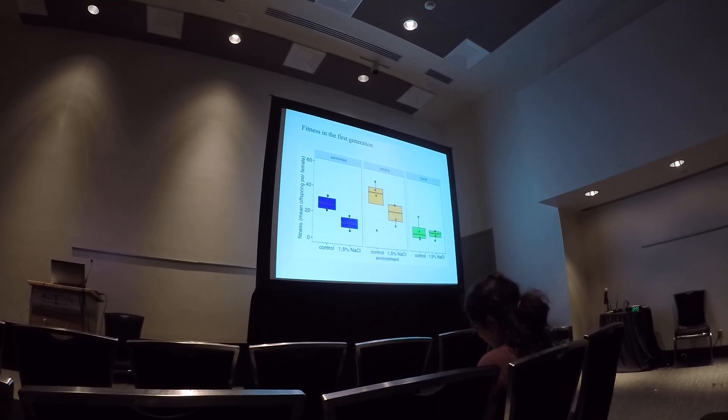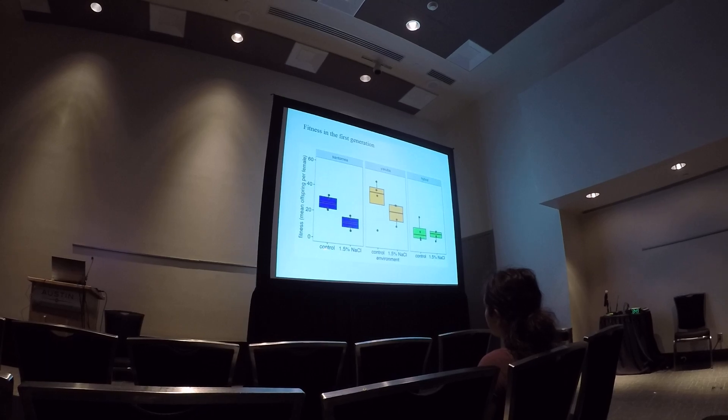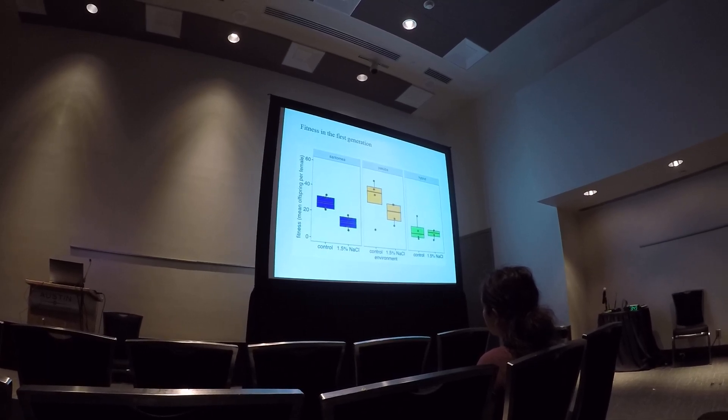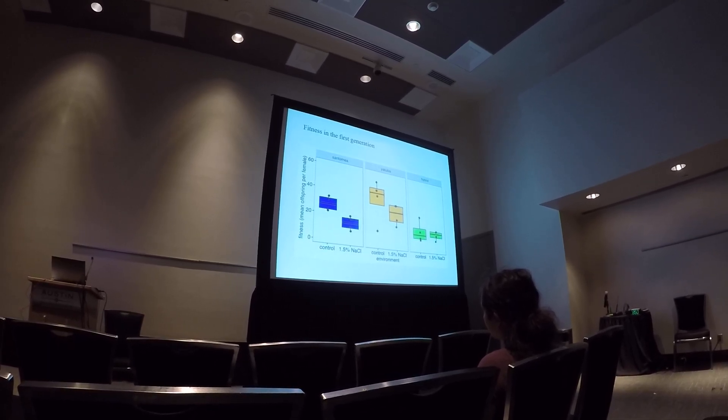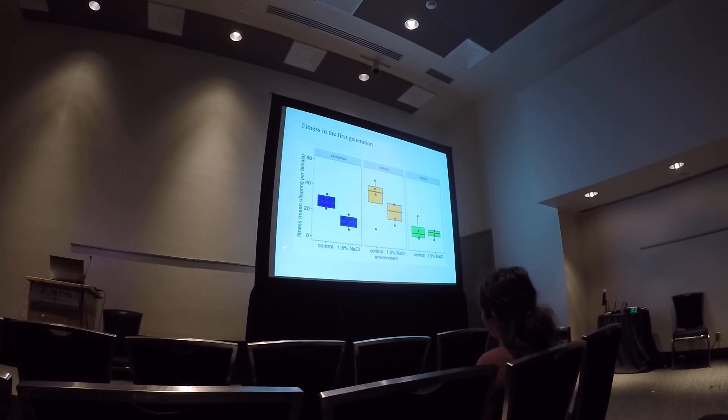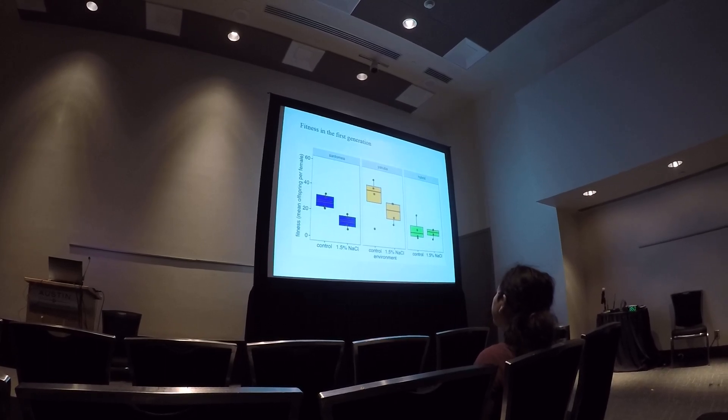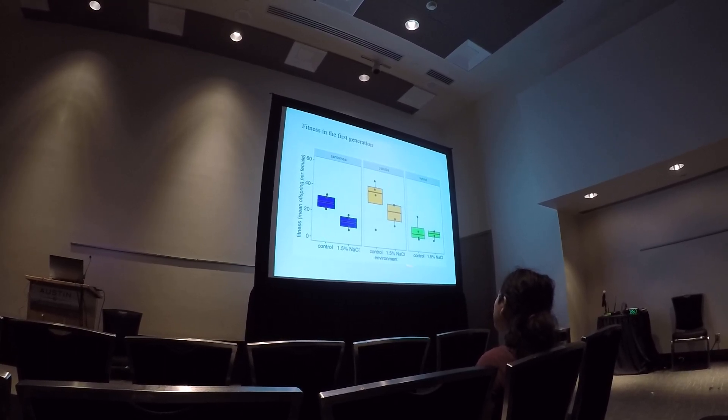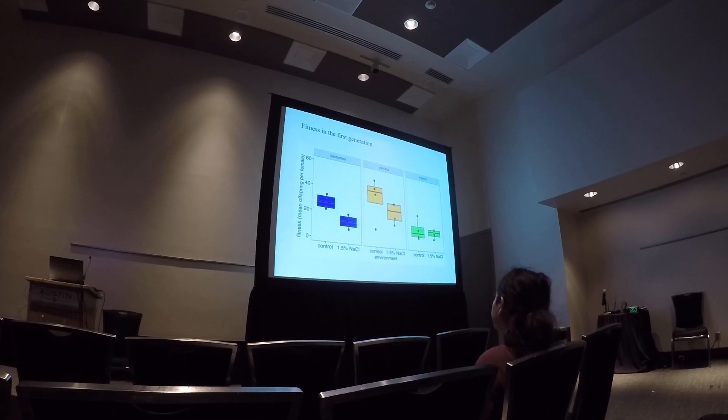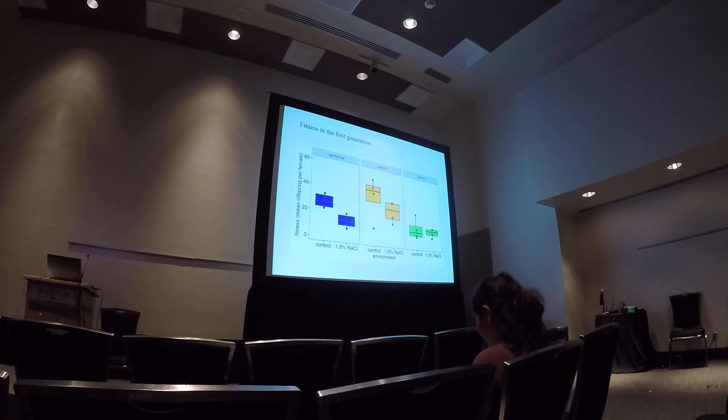So at the onset of the experiment, what you're looking at here is fitness on the y-axis and then fitness in the control environment or the salt environment for the three different genotypes. The santomea, yakuba and the hybrids. And at the onset of experiment, fitness was lower for both parental species in the salt environment. The hybrids had kind of poor fitness overall in both the control and the salt environment. And their fitness was as low as the lowest fitness seen in the parental species.